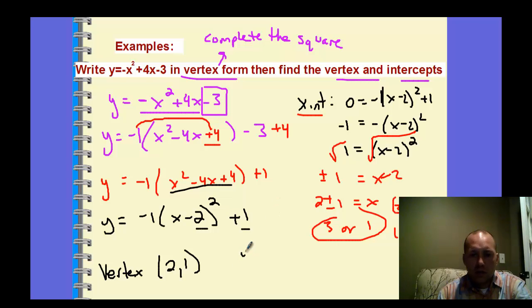The y-intercept is found by plugging 0 in for x. So I'm going back to this function that we wrote right here. So then this is going to be y equals negative 2 squared is 4, and then we get negative 4 plus 1 which is negative 3.